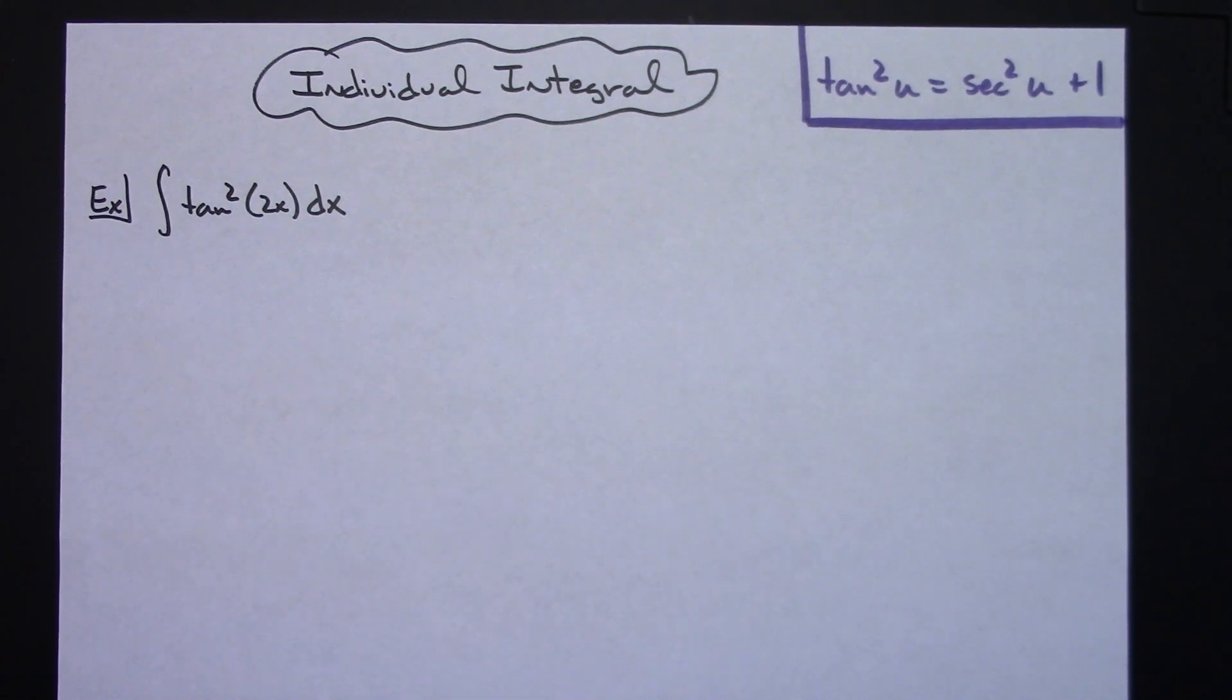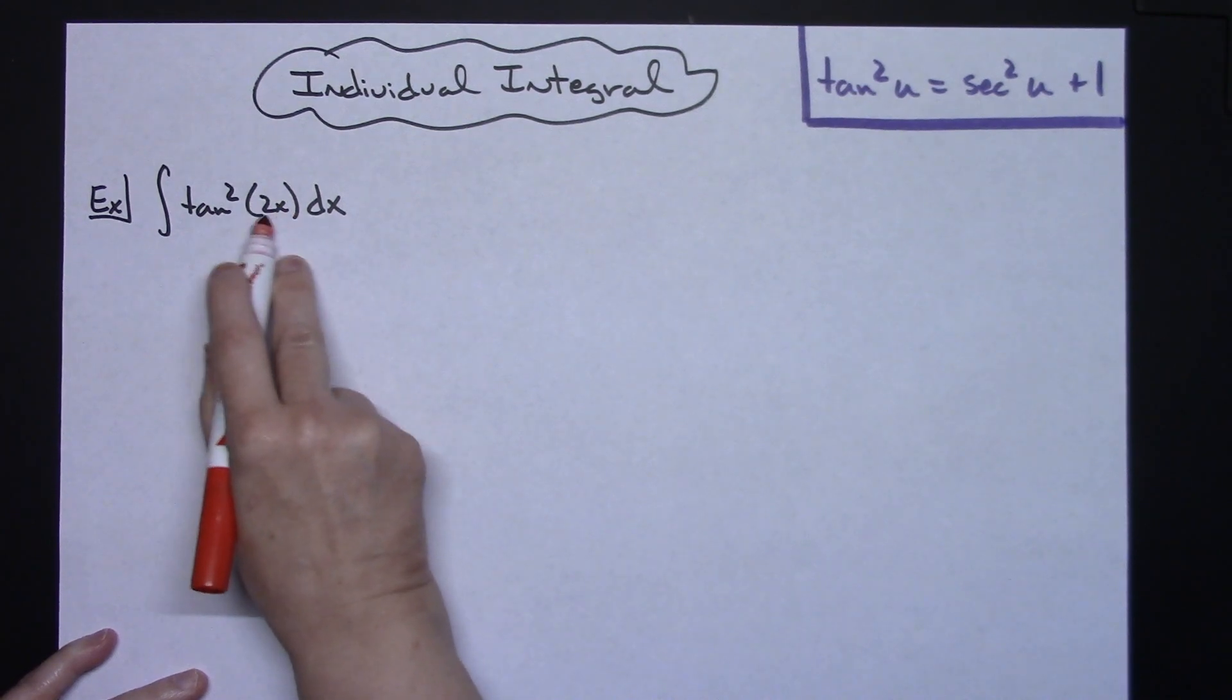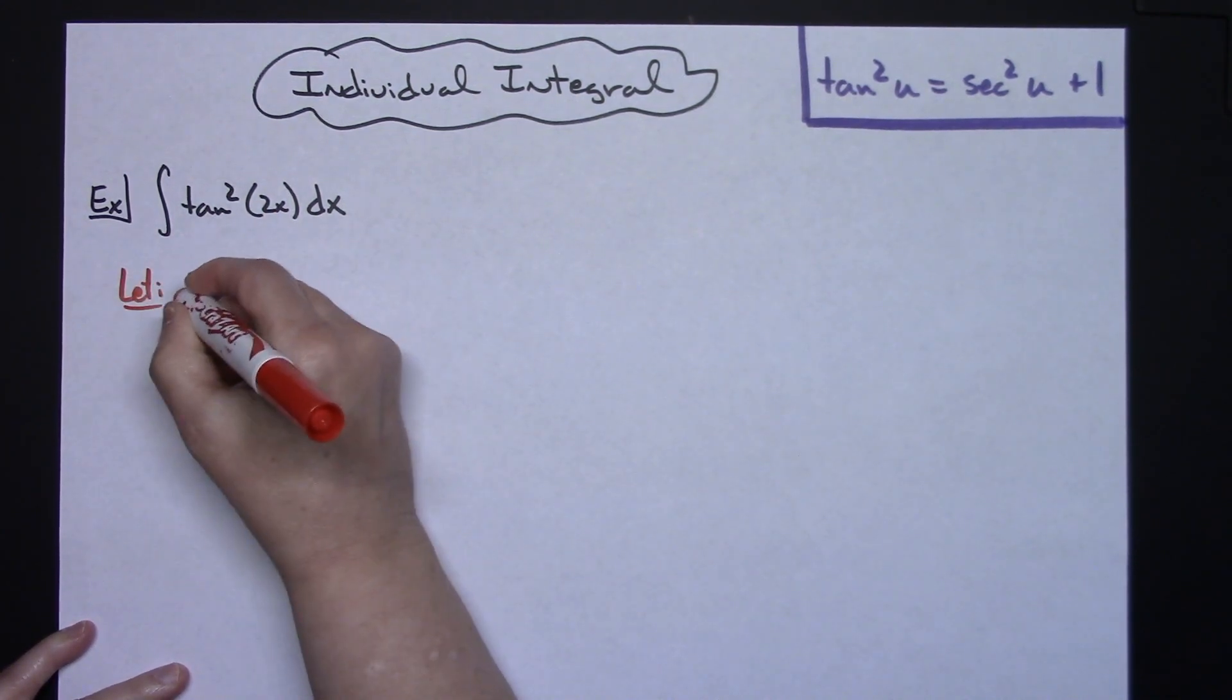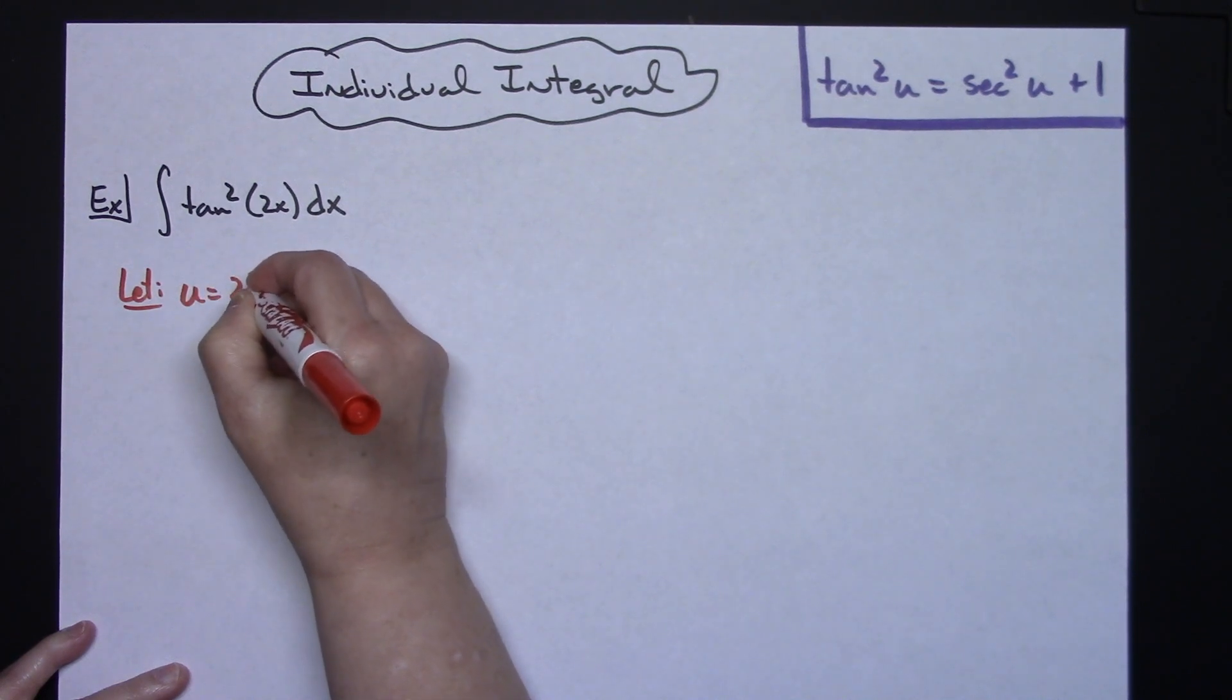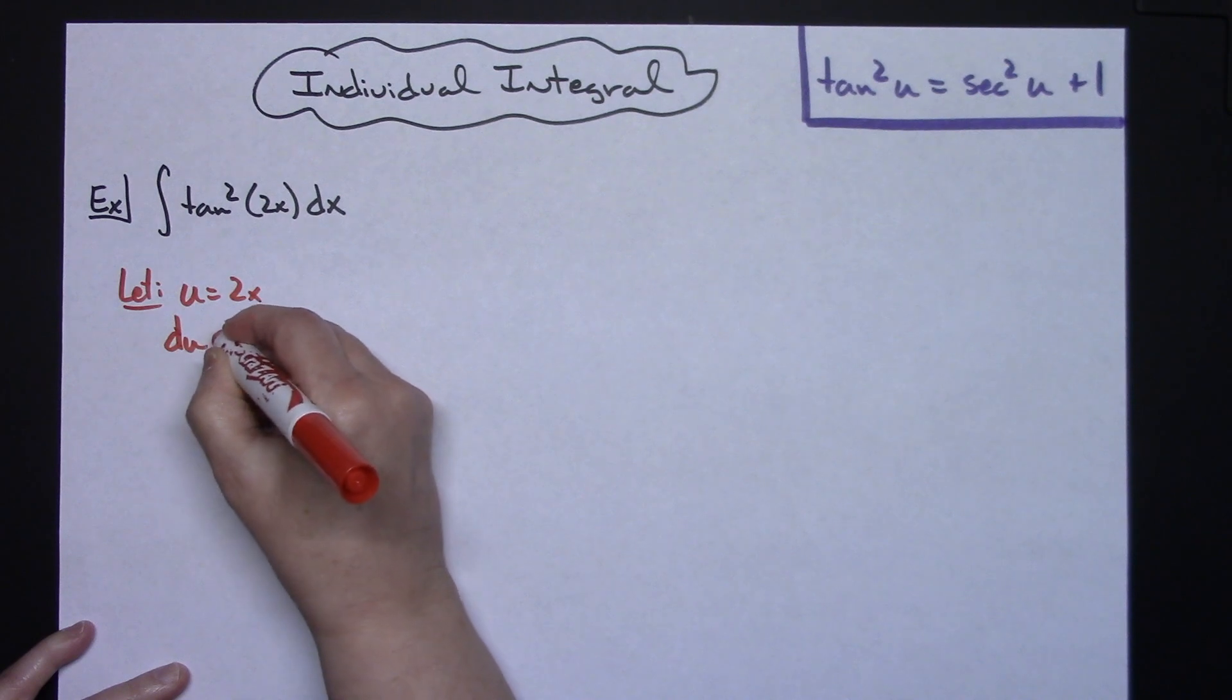This problem is going to turn out to be just a basic u-substitution. I'm going to let u equal the inside part of the function, which is the 2x. So I'm going to start by letting u equal 2x. I'm going to then take the derivative of both sides. I'll have du is equal to 2 dx.